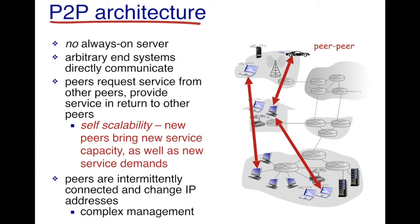Peers are intermittently connected — they can disappear whenever they want and they are mobile, and the IP addresses can also change. The management of a peer-to-peer architecture is way more complex than a server-to-client architecture, but peer-to-peer systems are distributed in nature and they don't need a server that actually coordinates all these different clients.